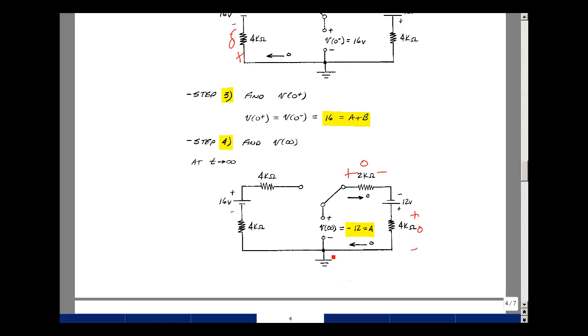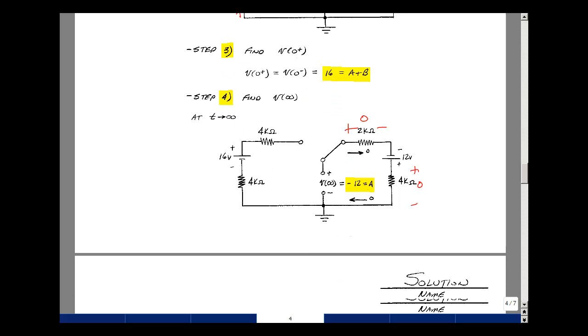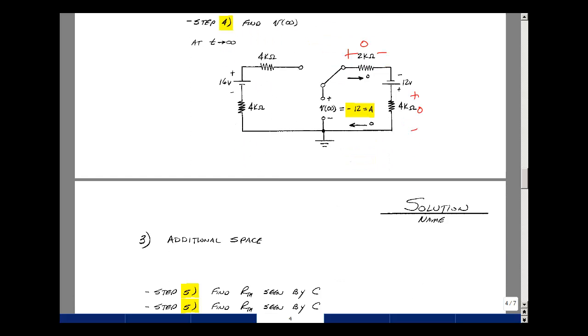Or if you don't like that, just go around the loop. The rise in voltages is v, drop of zero, drop of minus 12, drop of zero. Minus 12 for a plus b times e to the minus infinity over tau, that's just equal to a. We can now solve for b.